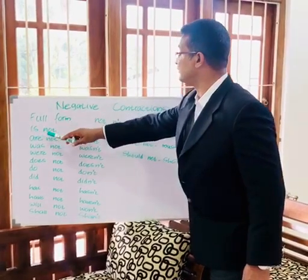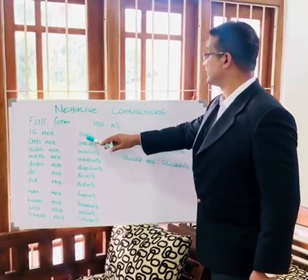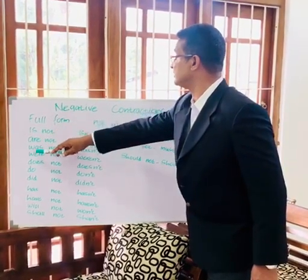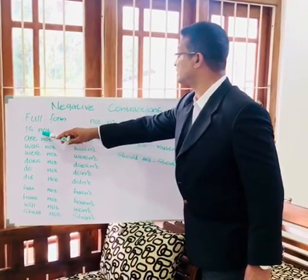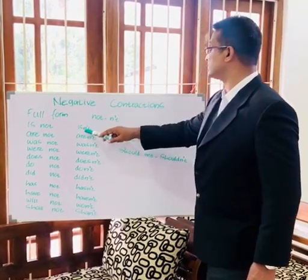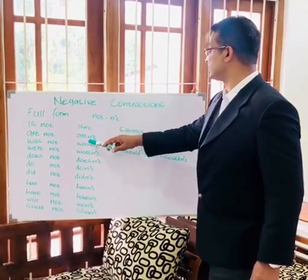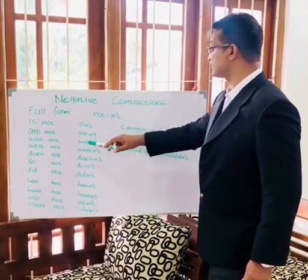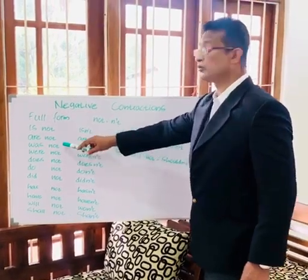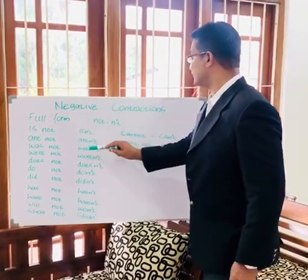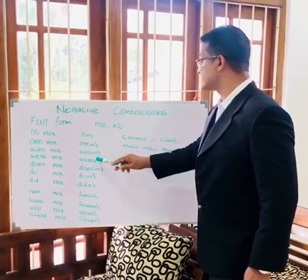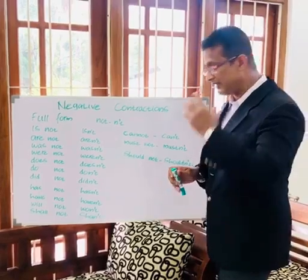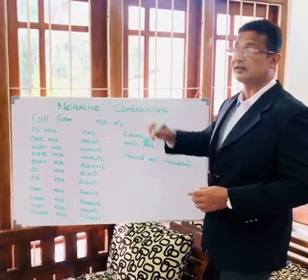So here you see 'not' — and when you shorten it, you add an apostrophe T. For example: is not becomes isn't, was not becomes wasn't, were not becomes weren't, and does not becomes doesn't. You see here — the addition is apostrophe T.